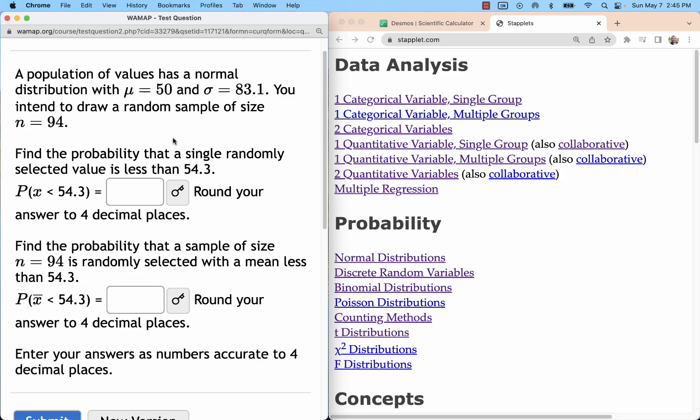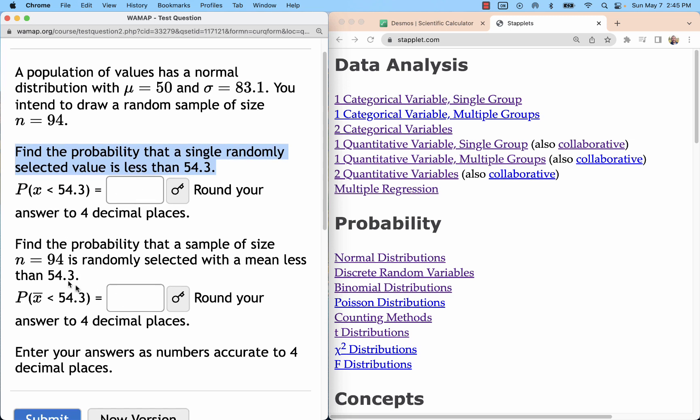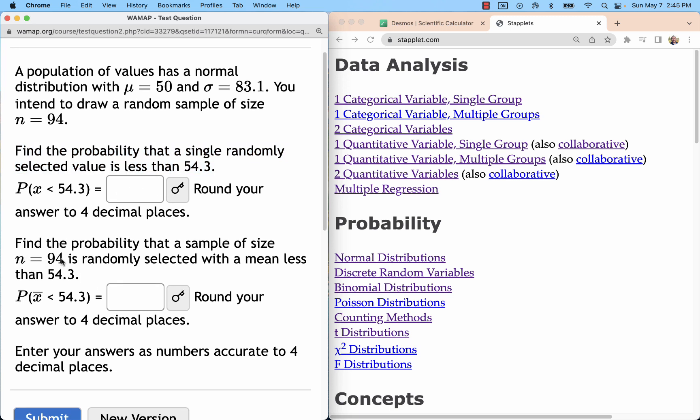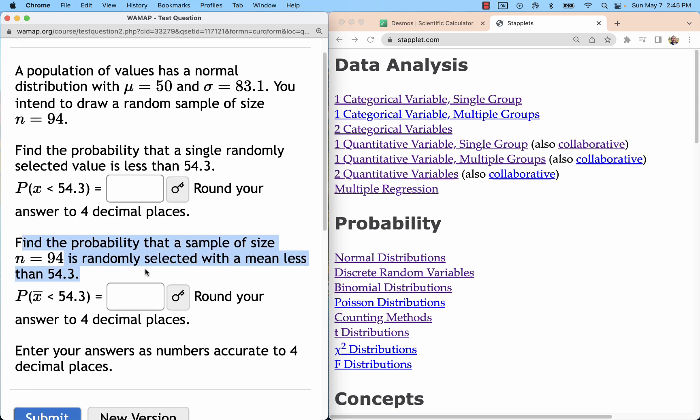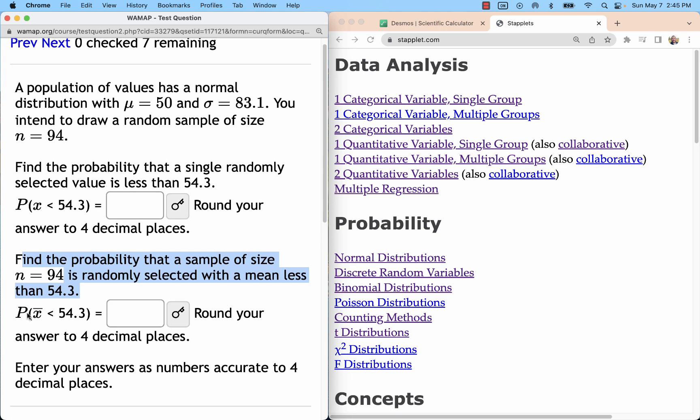In this problem we're going to look at probability for a single value and probability for a sample mean. This first probability is the same thing we did in the last chapter involving normal distributions, so that's kind of a review problem. When we have a sample of 94, that's when we'll use the central limit theorem and find the standard error to figure out that probability.